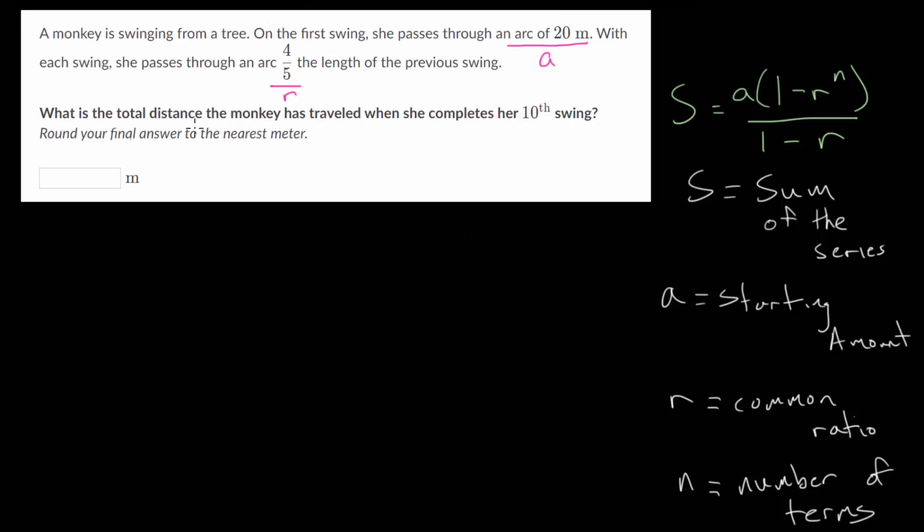What is the total distance the monkey has traveled when she completes her 10th swing? So that's our N value. That's the number of swings that the monkey will take, or the number of terms in the geometric series. So let's just write this down and get an idea of what it actually looks like before we just plug in the values.